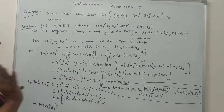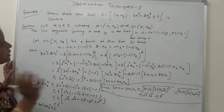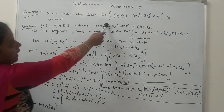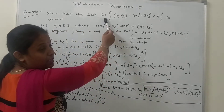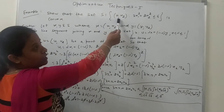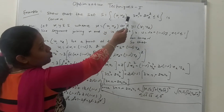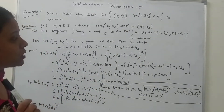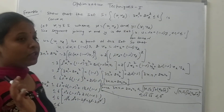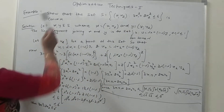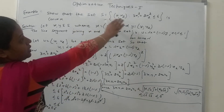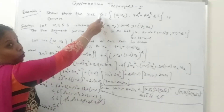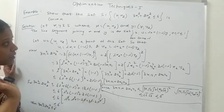Now we will do examples on the topic of convex set. Show that the set S, which is a set of two-tuples (X1, X2) such that 3X1² + 2X2² ≤ 6, is convex. We have to show that this set S is a convex set.